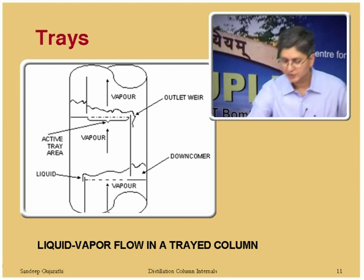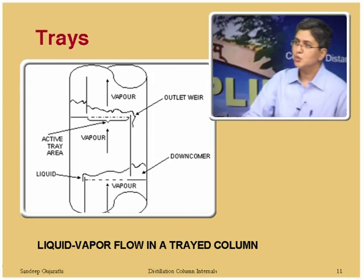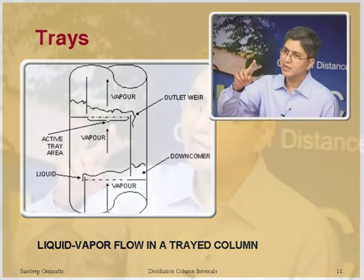The vapor from, say, tray number 10 will go to tray number 11 above, and the clear liquid will go to the tray below. The downcomer, the active tray area where actual vapor-liquid contact and mass transfer occur, and the outlet weir which ensures a liquid pool on the tray deck — these are the key components. From the outlet weir the liquid goes to the downcomer, and from the downcomer it goes to the next tray below.